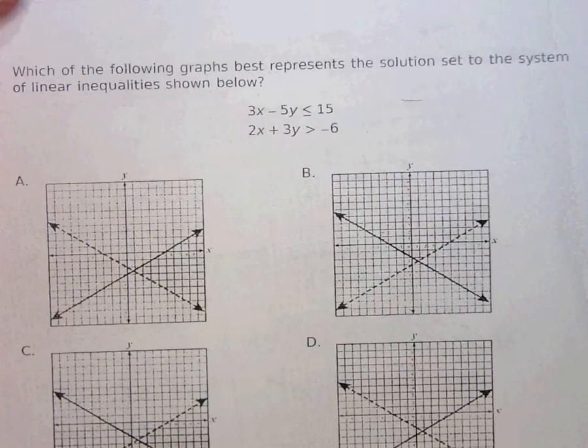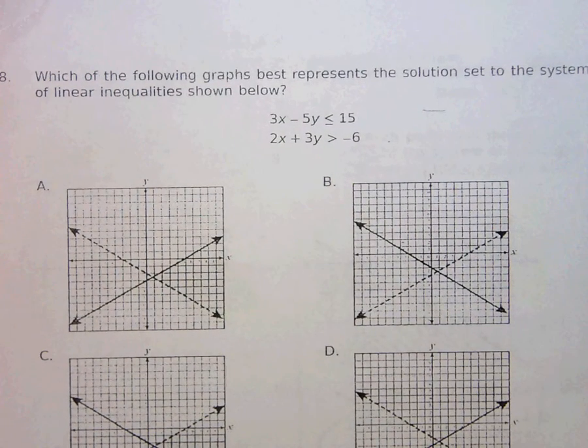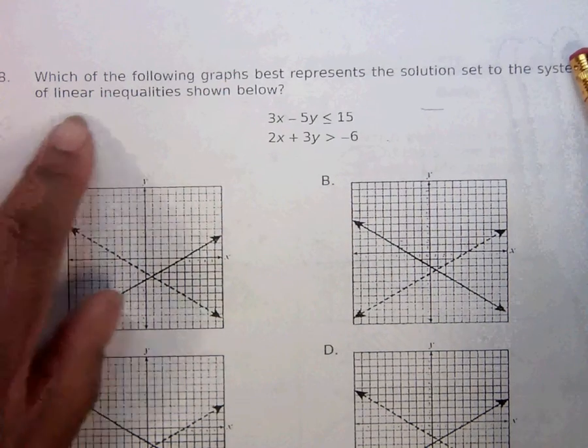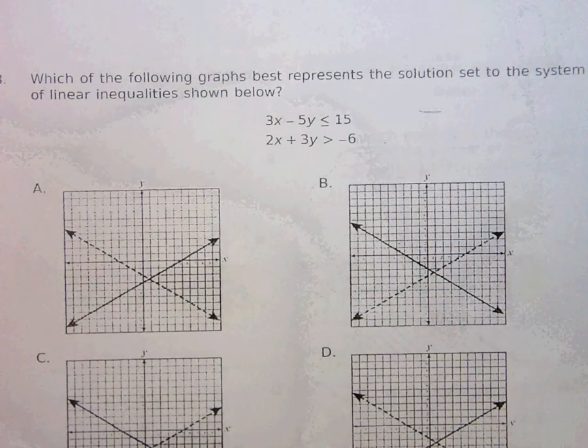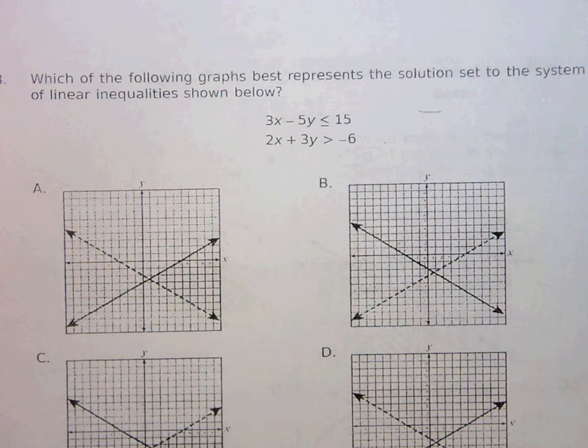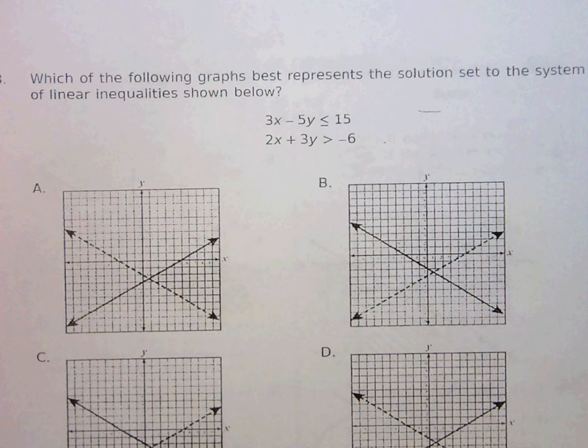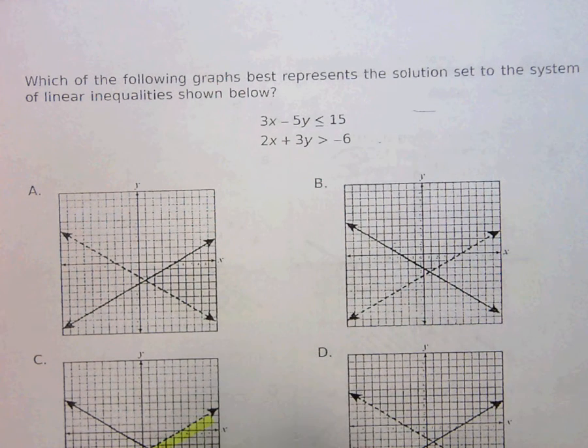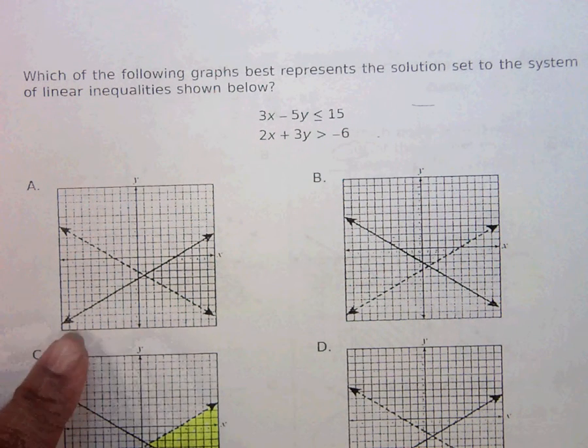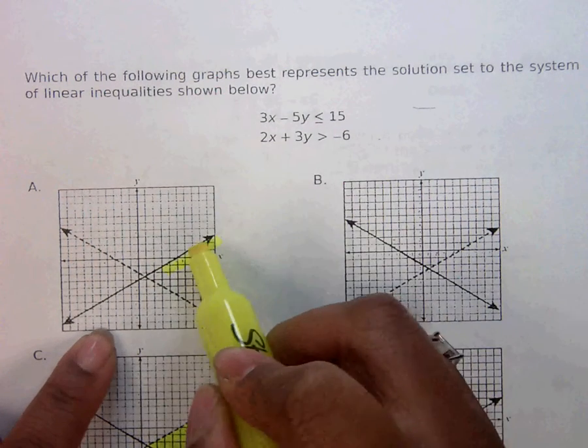Number 8. Which of the following graphs best represent the solution set to the system of linear inequalities shown below? So let's get to work. Now Ms. Pierce didn't label this one, did she? No, she did not. So let's fix it. Letter C, that's the shaded region. Letter A, it looks like that's the shaded region, or is it?